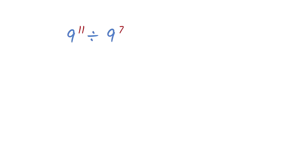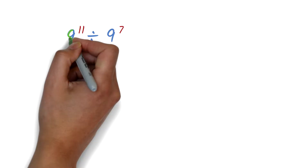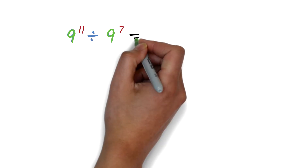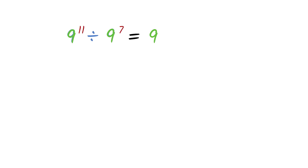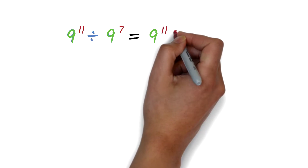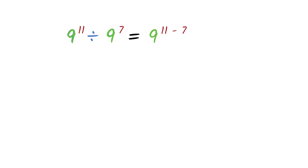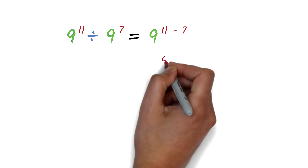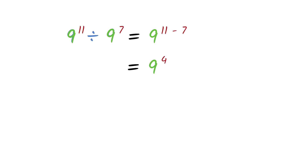Try this: the first thing we check is if the bases are the same — they both have a base of 9. Since the bases are the same, we can simply subtract the exponents: 11 minus 7 equals 4. So we have 9 exponent 4 as our answer. Note that this rule only applies when the bases are the same.